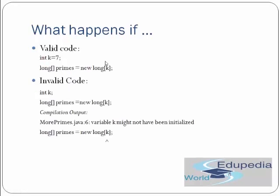What happens if int k = 7 and then long[] prime = new long[k]? That is fine — the array of size 7 will be assigned. However, if you declare int k, create the array with k, and only assign k's value afterward, it will give a compilation error because the variable k might not have been initialized. You cannot use k without initializing it.